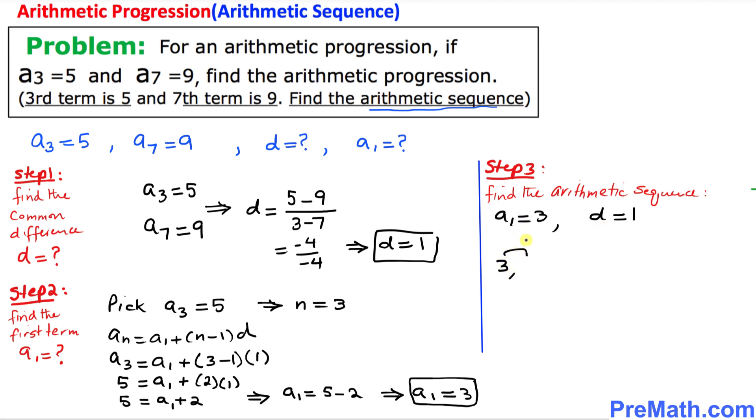So I can write 3 as the first term, and as we add this common difference d = 1, we're going to add, so this is going to make 4, and then we add plus 1 again, makes 5, add plus 1 again makes 6, and so on.